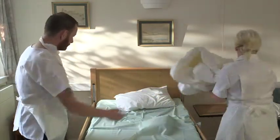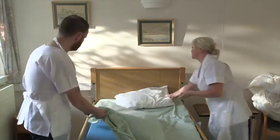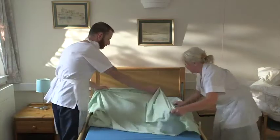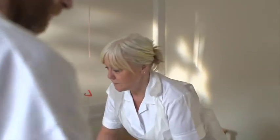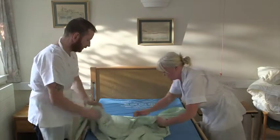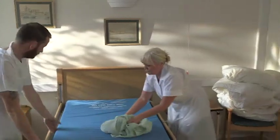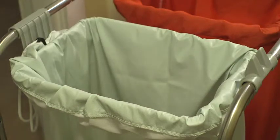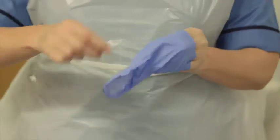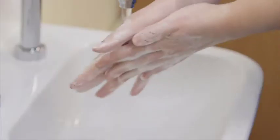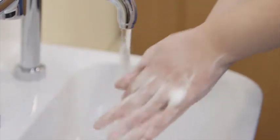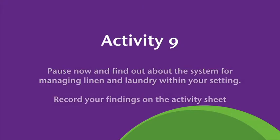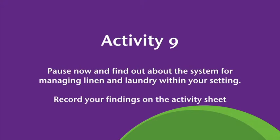First, remove the used linen by rolling or folding the linen into a bundle. If there is faeces or vomit present, this should be picked up using a paper towel and disposed of. Used linen should not be put on the floor, shaken, soaked or rinsed. It should instead be placed as a bundle in the correct laundry bag. There will be separate laundry bags for used linen and infectious linen – the laundry bag should be close to hand so you don't have to walk down a corridor with it. Remove your gloves and apron and carry out hand hygiene before handling the clean linen and completing the task. Activity 9: Pause now and find out about the system for managing linen and laundry within your setting, and record your findings on the activity sheet.